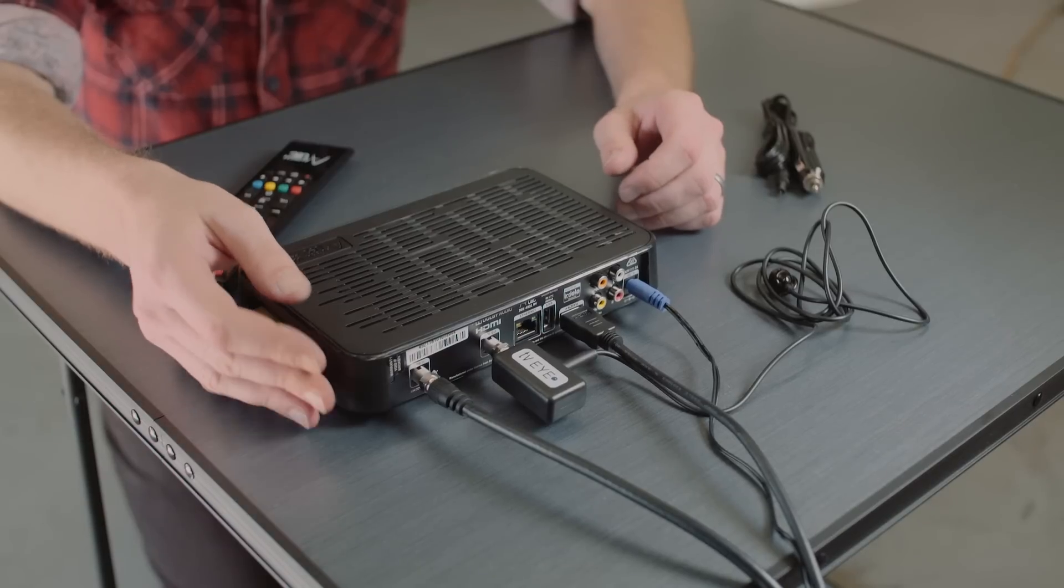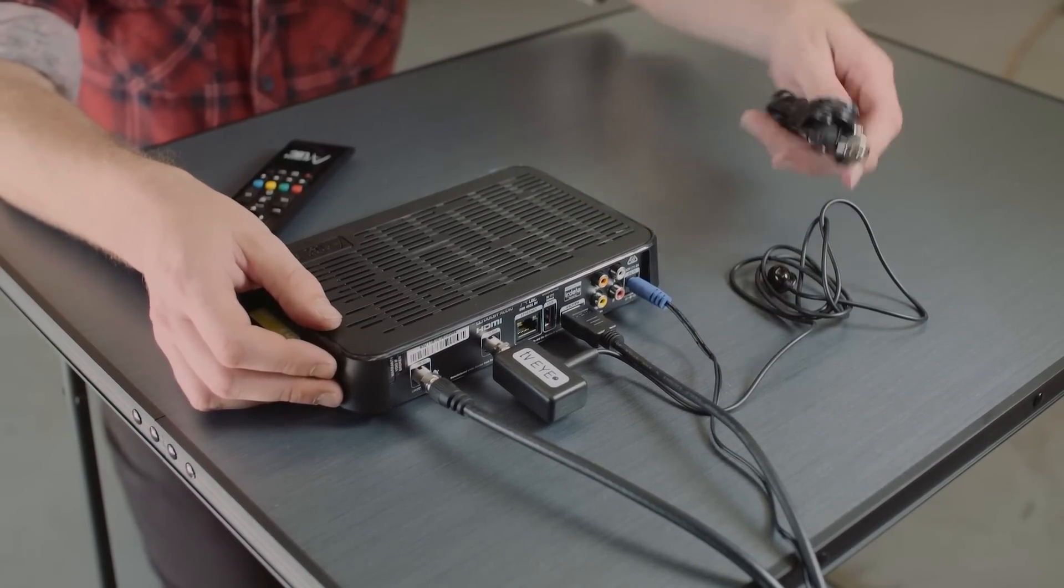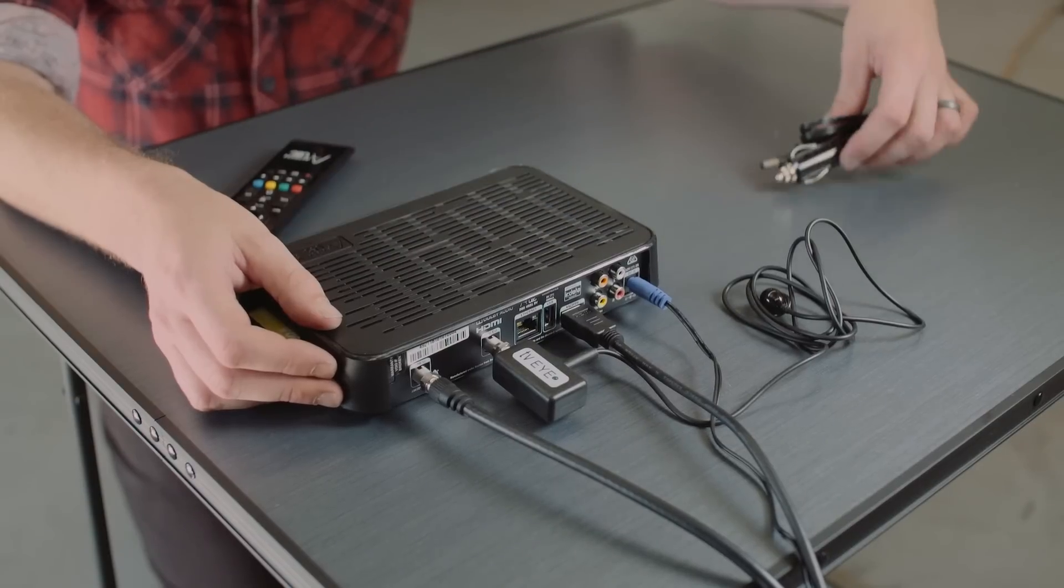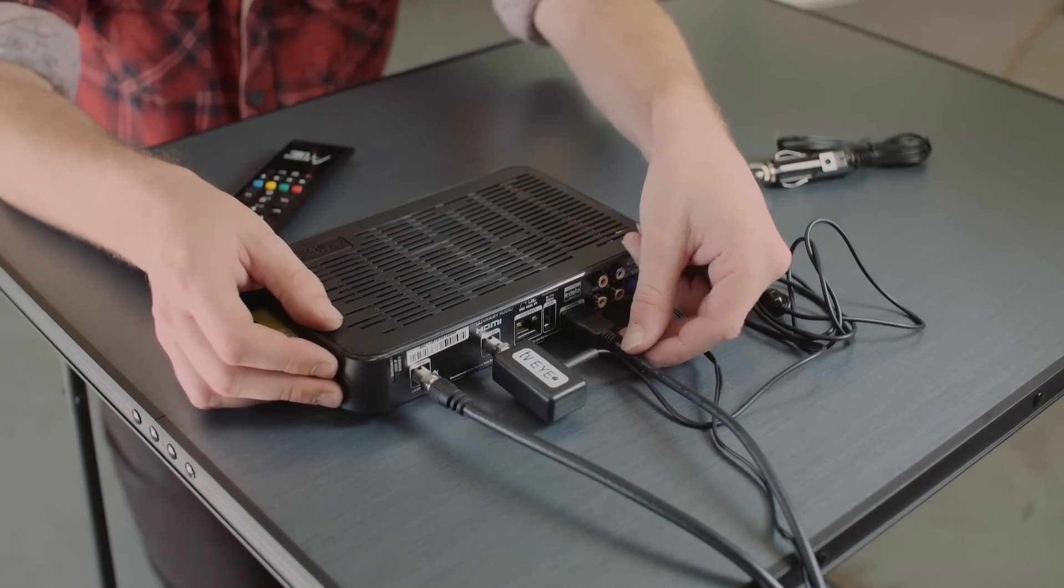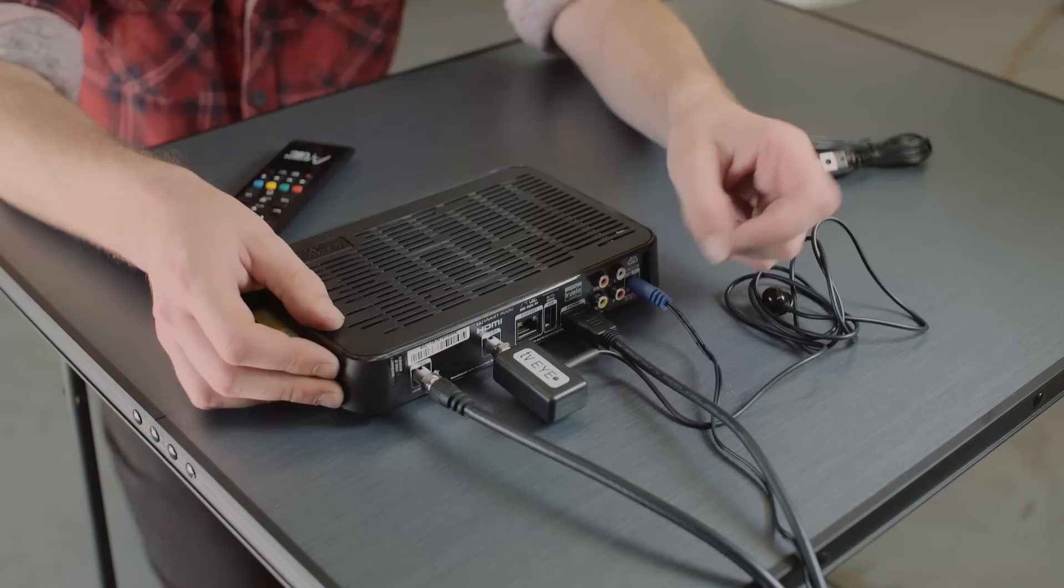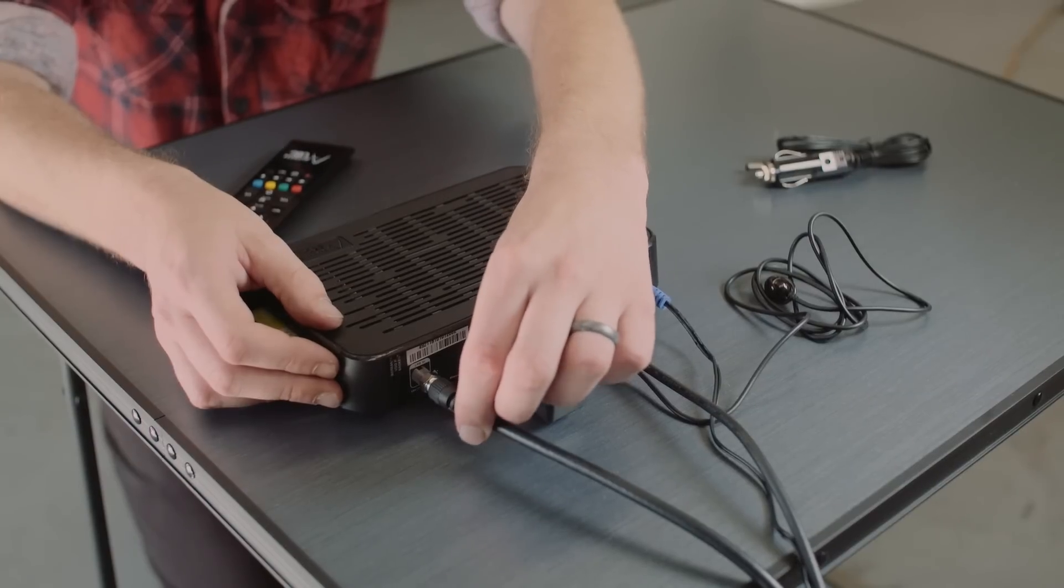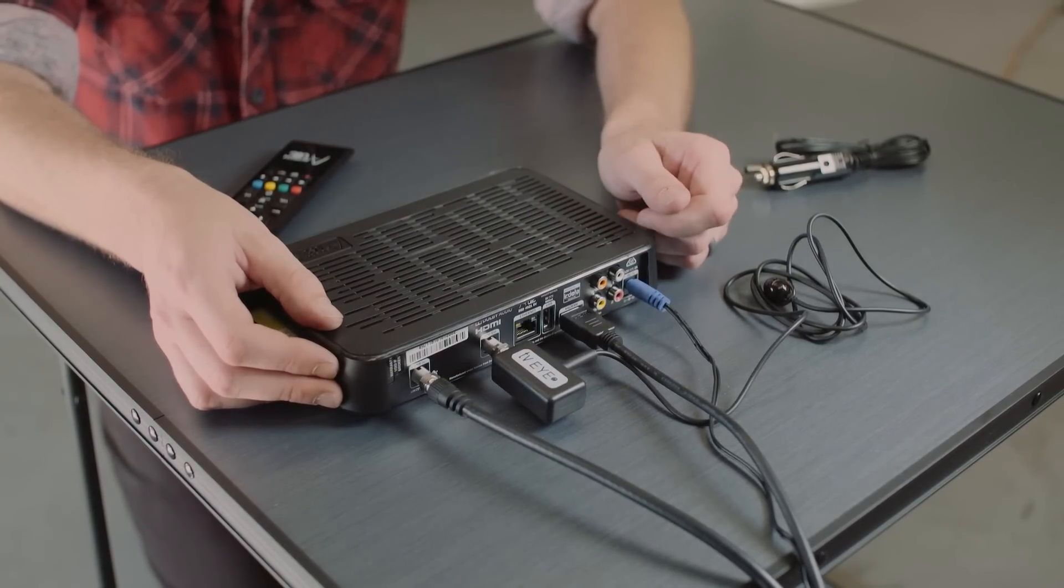The installation of the VAST unit couldn't be simpler. You've got power here which is via 240 volt. You can also use the supplied 12 volt cable. To connect to the TV we've used the HDMI output but you can also use the RCAs here. This little unit here is for the remote control and this connects straight to the satellite so you can get signal for the unit.